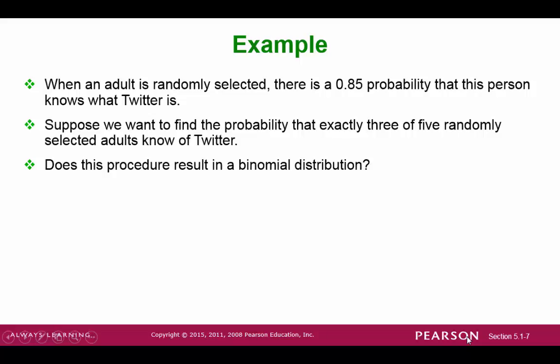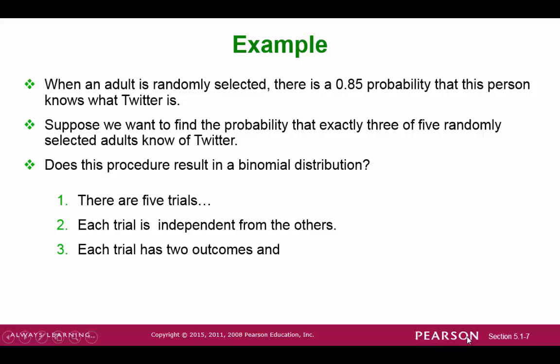Is this a binomial distribution? Well, there are 5 trials. Each trial is independent. Each trial has two outcomes. Either they know Twitter or they don't. And there is a constant 85% probability that a person knows about Twitter. So yes, this is a binomial probability distribution.